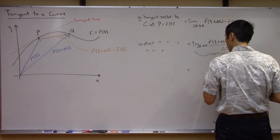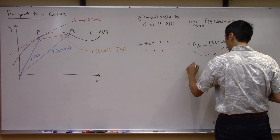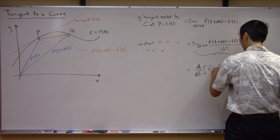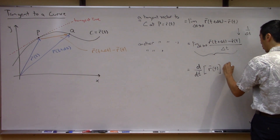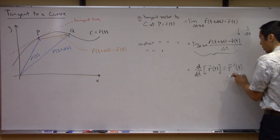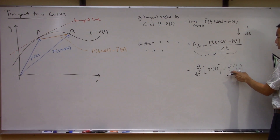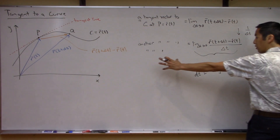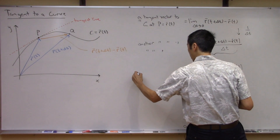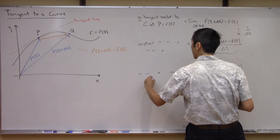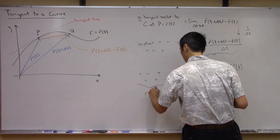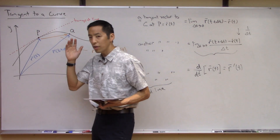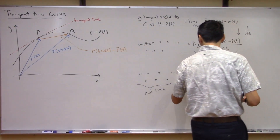So what we end up with is this is nothing more than d/dT of R of T, or commonly written as R prime of T. This means you take your parameterization of the curve C, take its derivative with respect to the independent variable T, and that gives you a tangent vector to C at P. So to get the tangent line, all you do is take your parameterization and differentiate with respect to T.